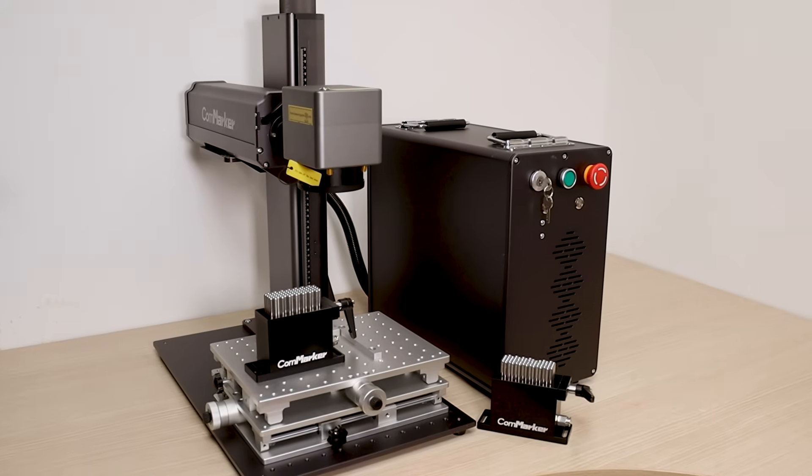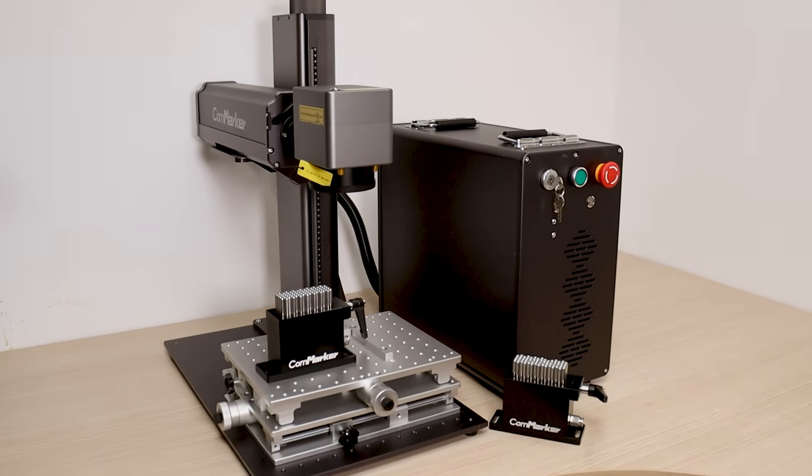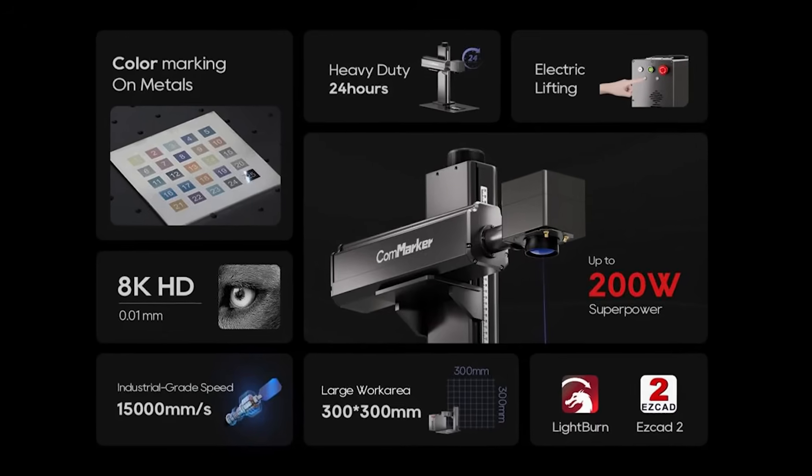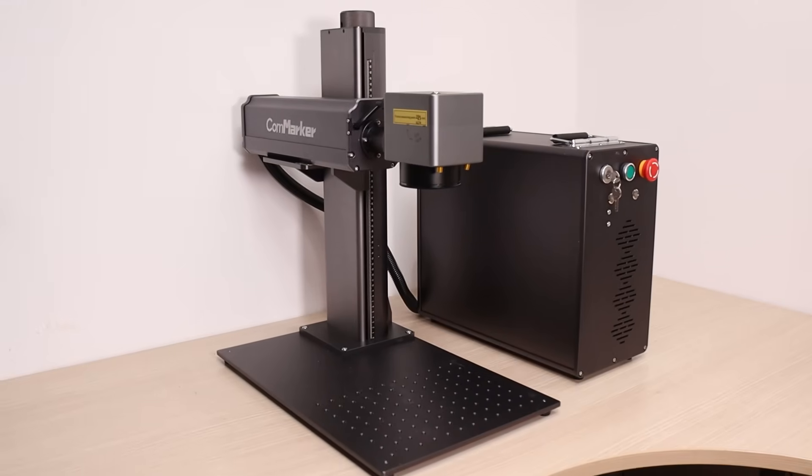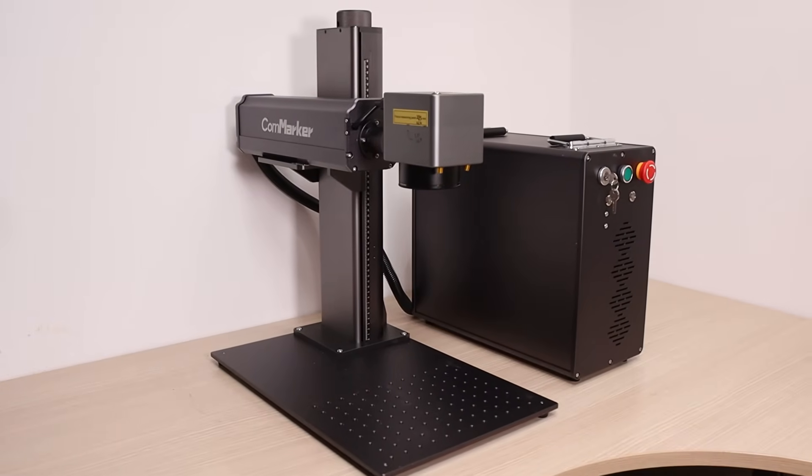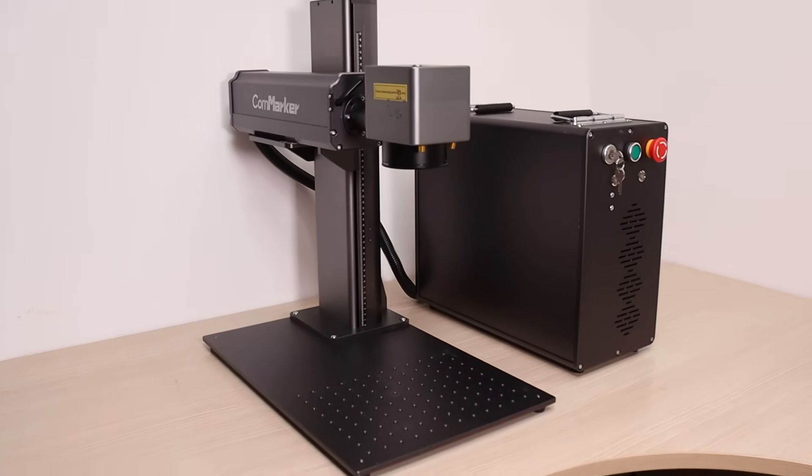The CommMarker Titan 1 is a split-type JPT Mopa fiber laser, available in power outputs of up to 200 watts, making it a powerful tool. Here, I have the 100-watt version, which offers a great balance between power and versatility.